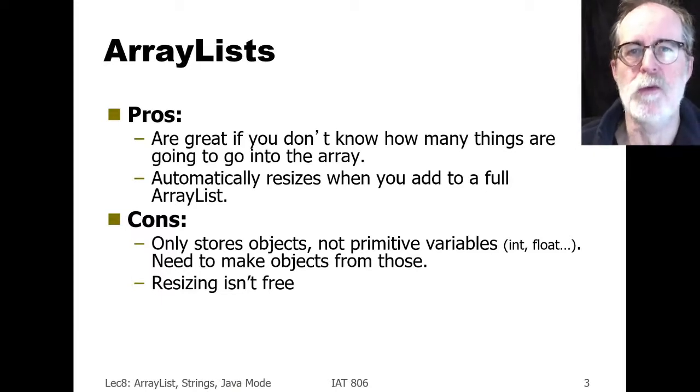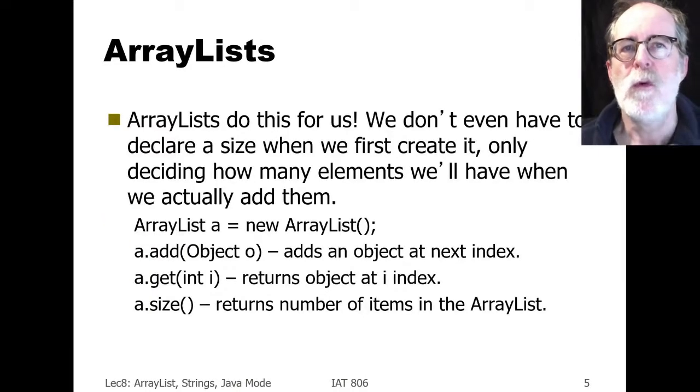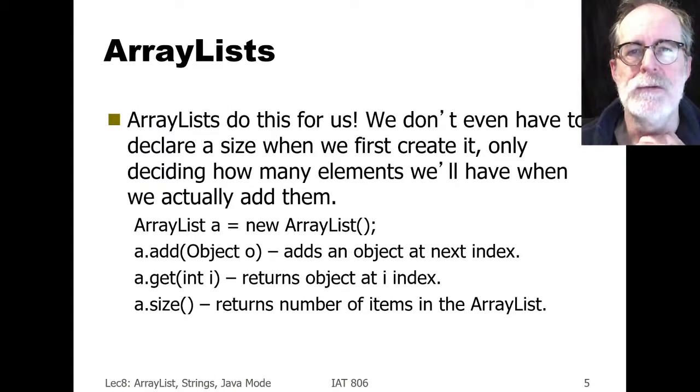The drawback, however, or a couple of drawbacks, is that one, ArrayLists are really only built for storing objects. As we said in the previous lecture about ArrayLists, it stores by default capital O objects, which are the parent class of all objects in the Java system. But that means it does not store primitive types by themselves. There's a kind of an object version of primitive types, but really it's not for storing integers or floats in a super efficient way. So you need to make objects from those primitive types if you want to store them. The other thing is that resizing isn't free.